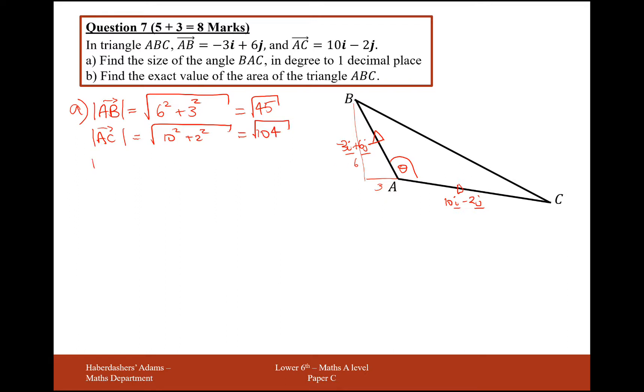And then we need the vector from B to C. So if we think here we need to go back along B and along C, so we need to go plus 3i, back along here, minus the 6j, and then forward down here, so plus 10i, and then minus 2j. So adding all these bits together, we're going to get 13i minus 8j.